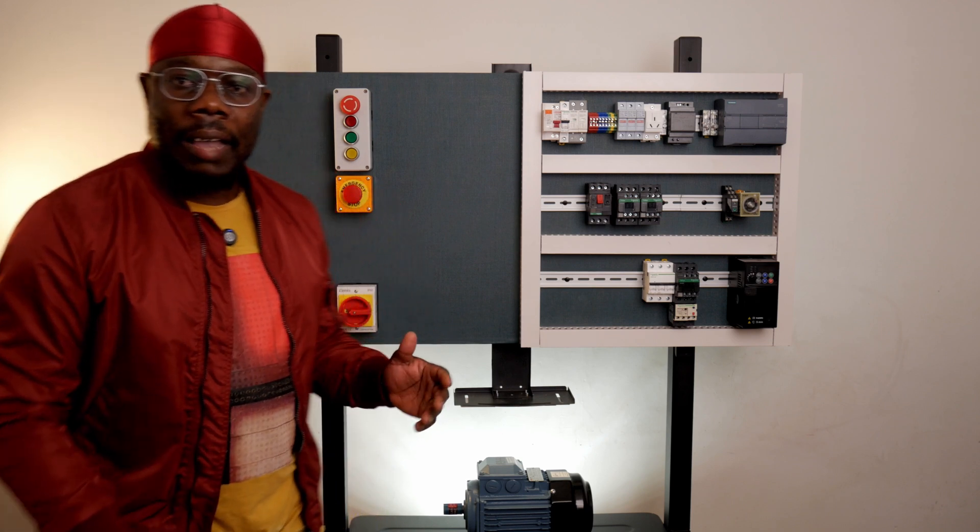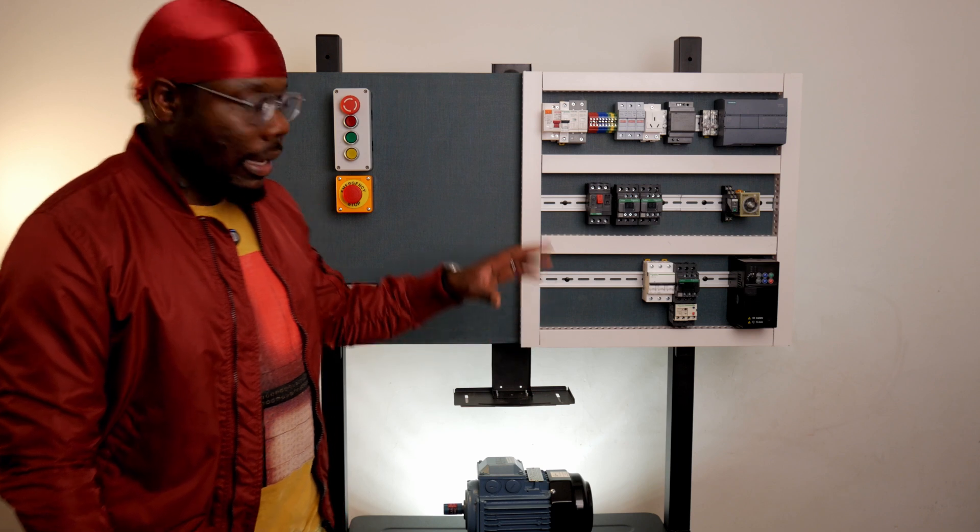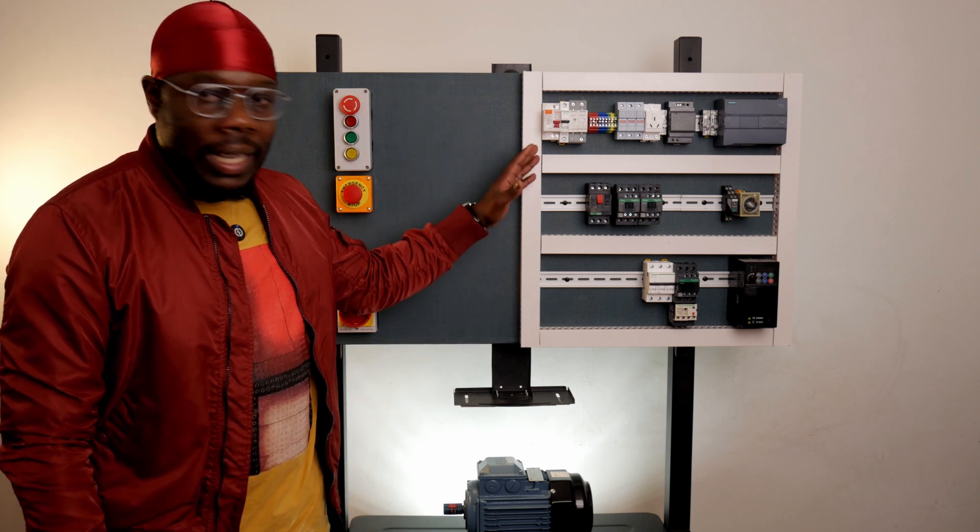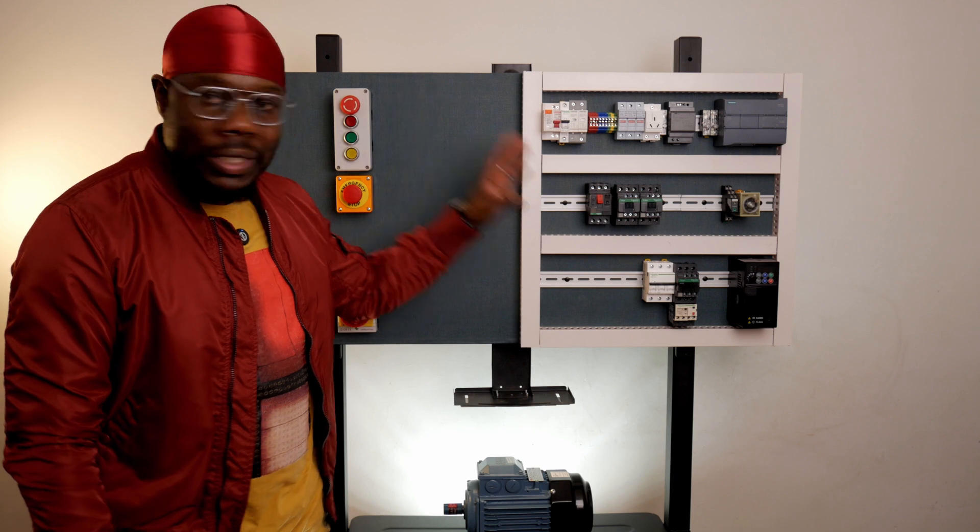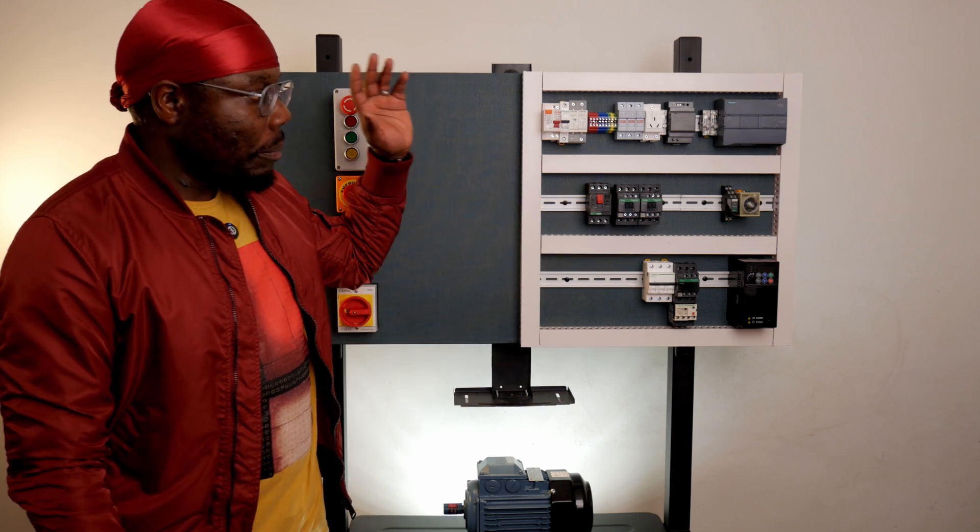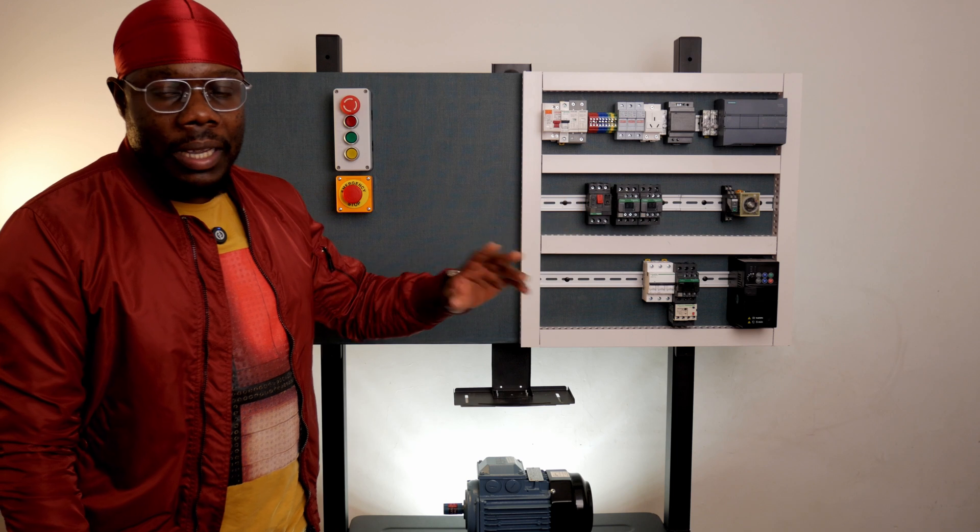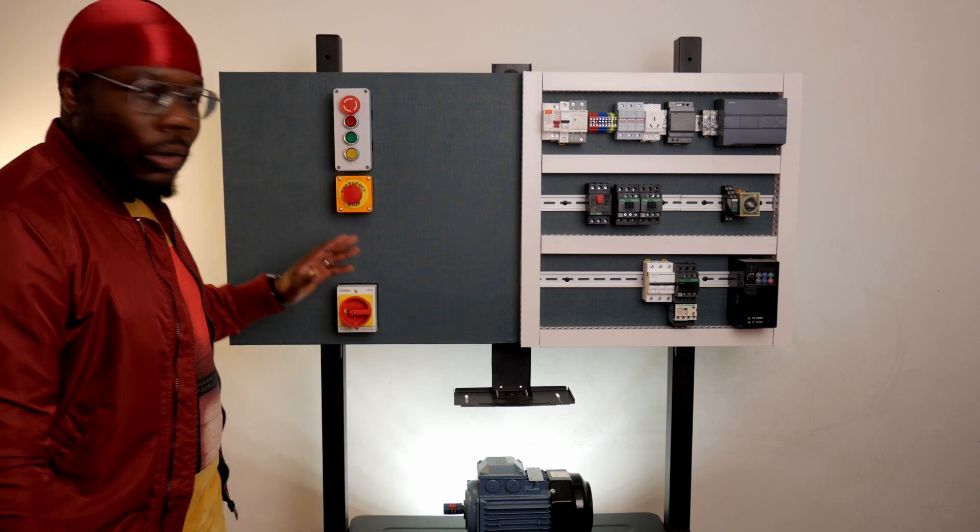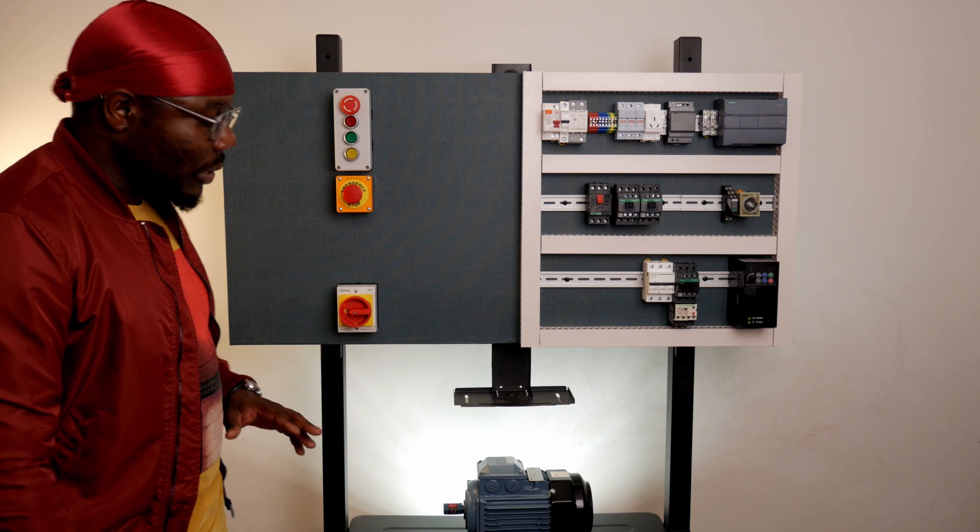And here, I've got a control panel. As you can see here, we've got circuit breakers. We've got fuses. We've got contactors. We've got overloads. A variable speed drive. A PLC. A timer. A relay. And then here, start-stop buttons. An e-stop. We've got an isolator. And we've got a three-phase motor as well.